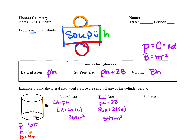For volume, we're doing area of the base, which we found to be 9π, multiplied by the height, which is 6. We end up with a volume of 54π, and because it's volume, our unit is cubed.